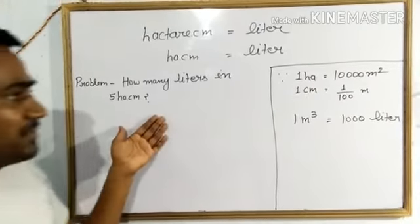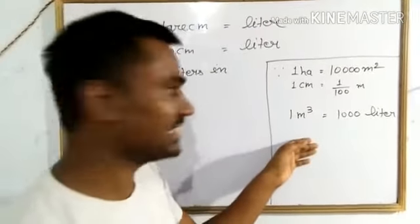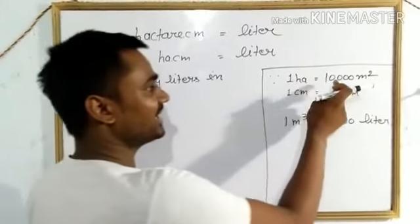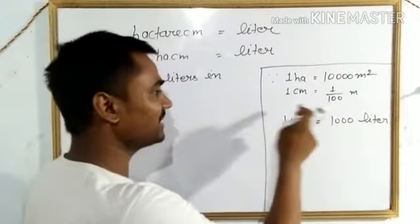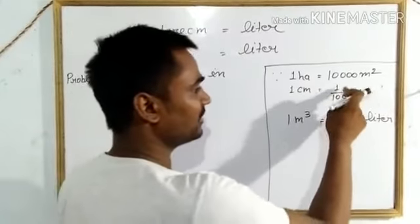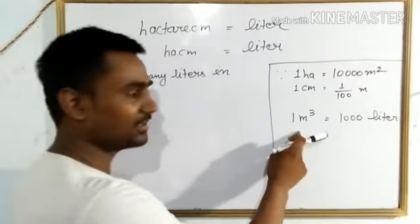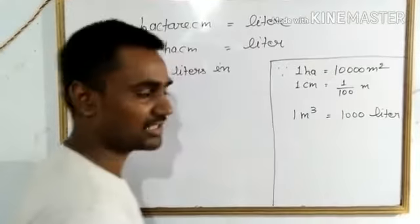We will solve this problem with the help of these equations. First, 1 hectare is equal to 10,000 square meters, 1 centimeter is equal to 1 upon 100 meter, and 1 cubic meter is equal to 1,000 liters.